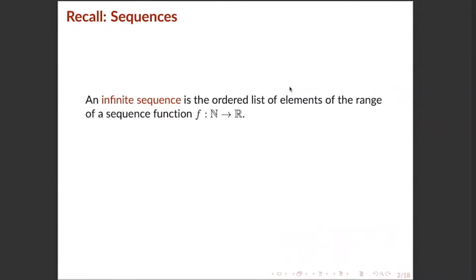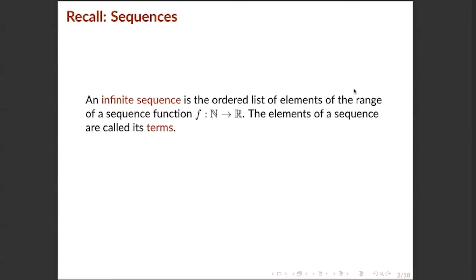First, let us recall what is an infinite sequence, or simply a sequence. An infinite sequence is the ordered list of elements of the range of a sequence function f from the set of natural numbers ℕ to the set of real numbers ℝ. The elements of the sequence are called its terms.